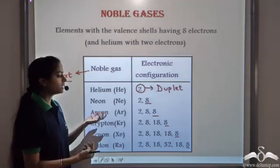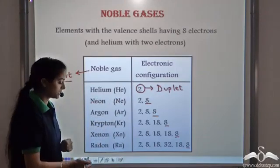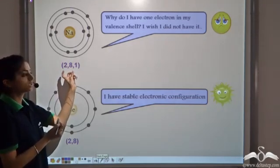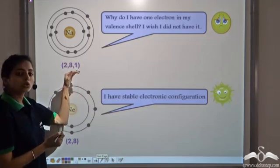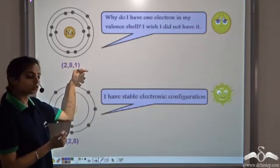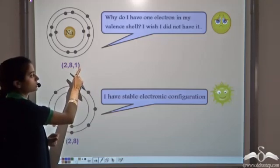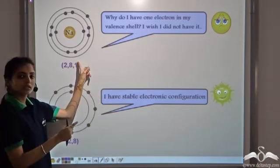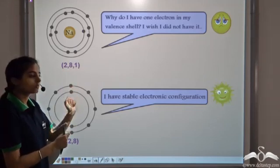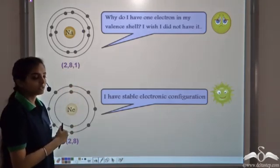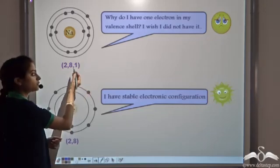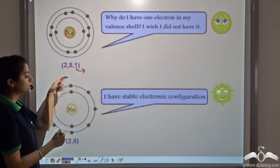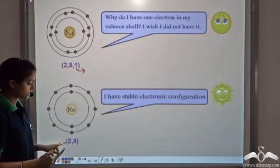So all atoms try to achieve this noble gas configuration to become stable. For example, sodium has the electronic configuration 2, 8, 1. Now to gain stability, that is to follow the octet rule, it can either gain 7 electrons, giving it the configuration 2, 8, 8, or it can lose this one electron, giving it the configuration 2, 8. Gaining 7 electrons is very difficult compared to losing 1 electron. So it prefers to lose this electron, and that is why it tries to attain the noble gas configuration of argon, which has the configuration 2, 8.